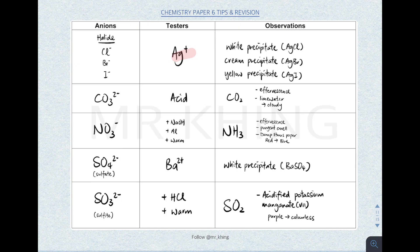To test for carbonate, we test with acid — it produces carbon dioxide. To test for nitrate (NO₃⁻), add sodium hydroxide and aluminum, then heat or warm the solution — it produces ammonia gas. Observations: effervescence, pungent smell, and it turns litmus paper from red to blue. For sulfate (SO₄²⁻), whenever you see barium — 100% they are testing for sulfate — a white precipitate is formed. For sulfite (SO₃²⁻), test with hydrochloric acid and warm — it produces sulfur dioxide gas, which turns acidified potassium permanganate from purple to colorless.